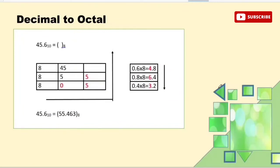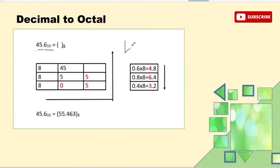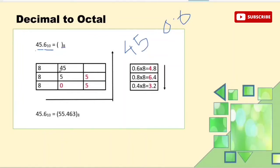Now suppose we have a decimal number with a decimal point and we want to convert it to the octal number system. The first step is to separate the whole number part and the decimal part. We keep the whole number — for example, 45 — and factorize the whole number part by 8. The quotient is 5 and the remainder is 5.